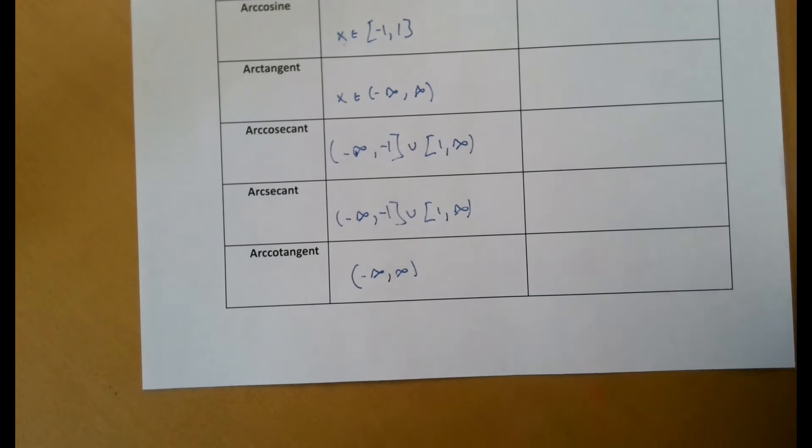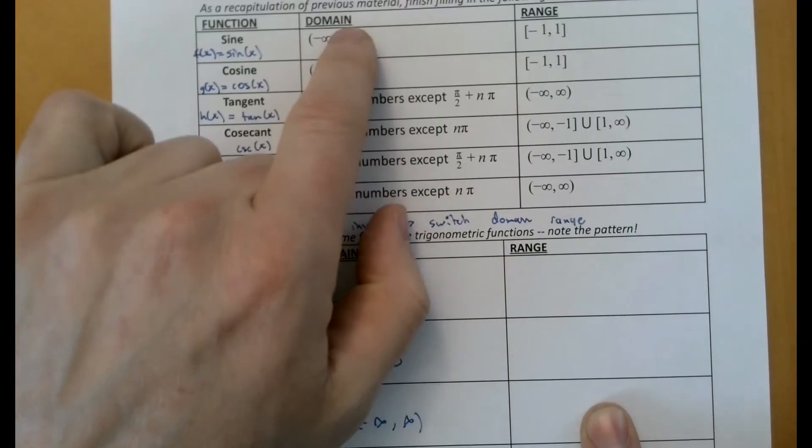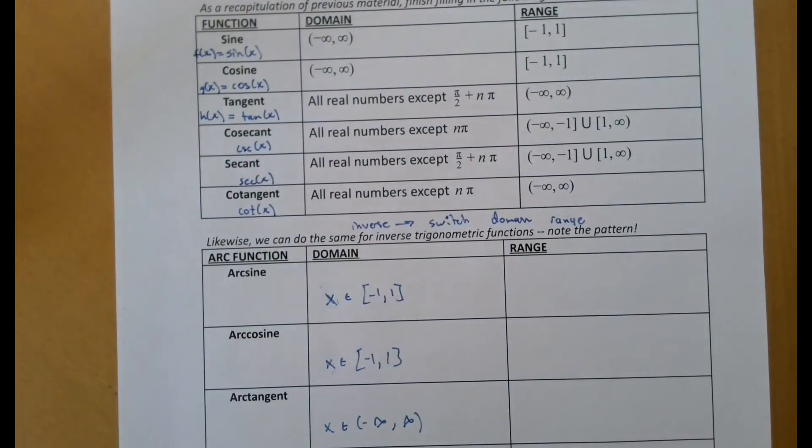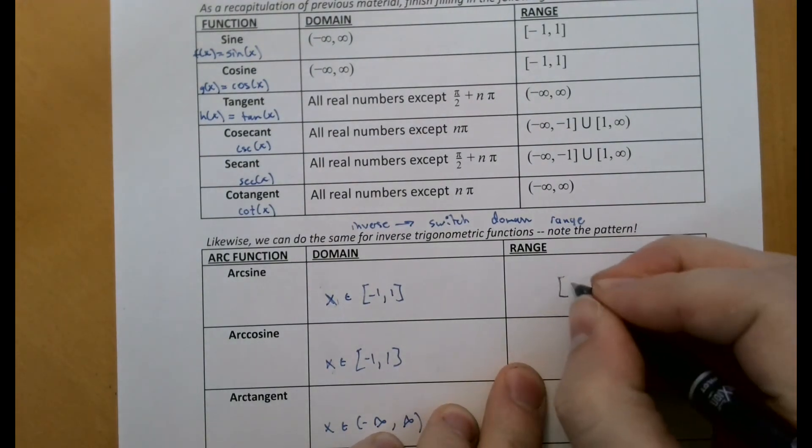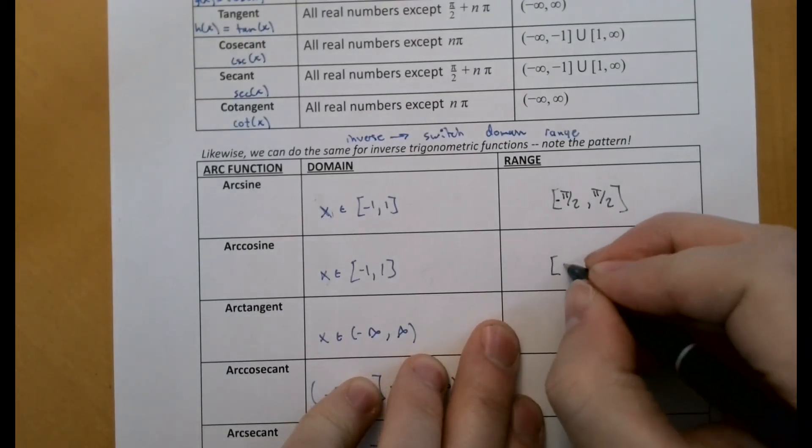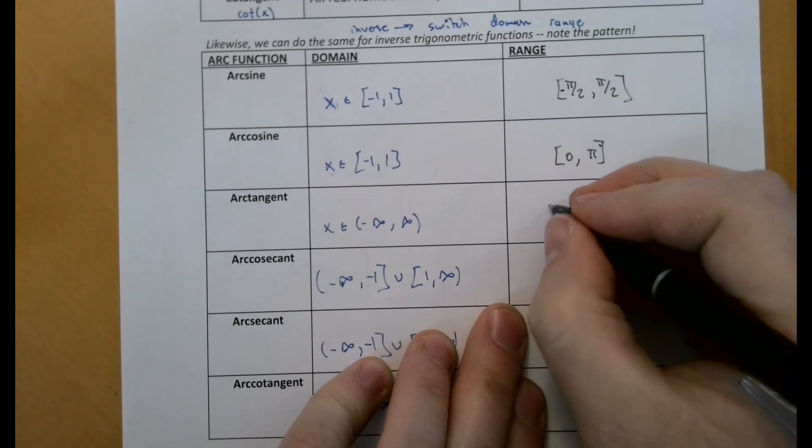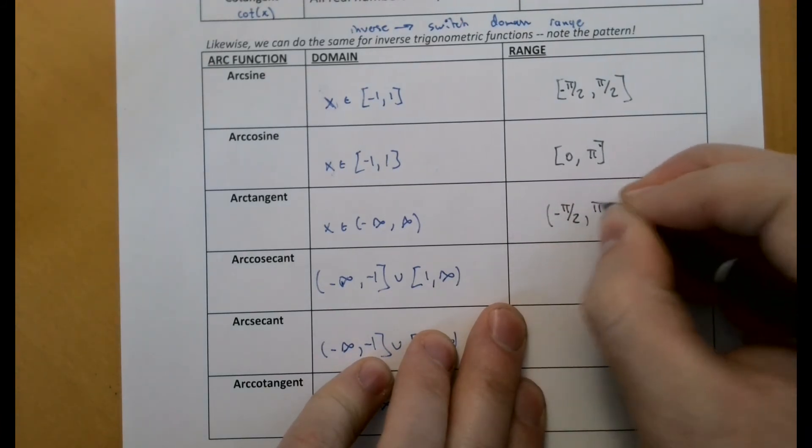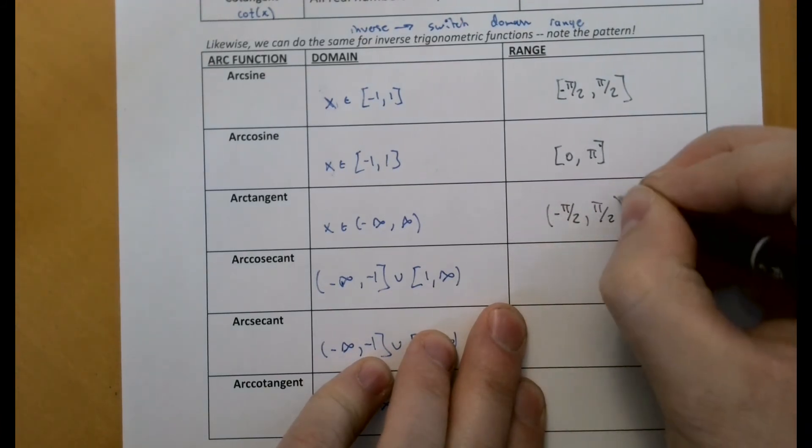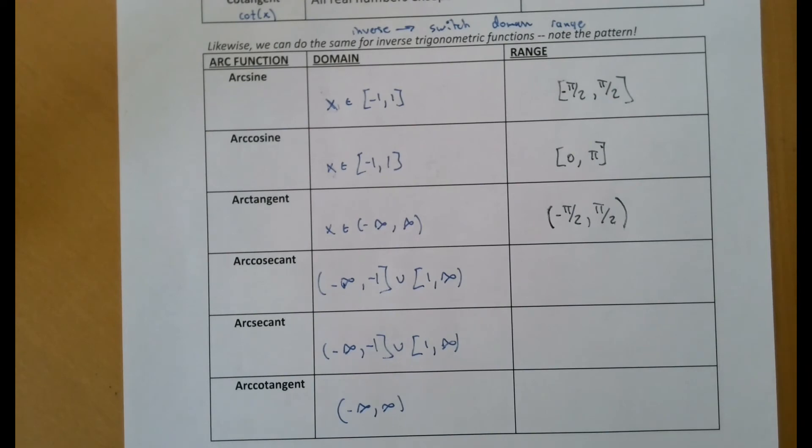So now we got to do the difficult task of identifying what's the range, meaning how did we restrict these domains to get these inverse functions. So we know the first three. We've restricted sine to be from negative pi halves to pi halves. And then cosine, we restricted it to be zero to pi, inclusively. And arc tangent, we restricted it to negative pi halves to pi halves. Not inclusively because the values at these points are undefined. They're asymptotes there. So the question is,